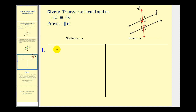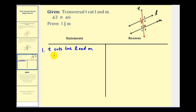The first step is almost always to state the given information. So we know that line T cuts lines L and M with angle three and angle six being congruent.